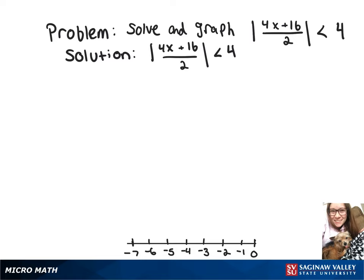So that means we've got negative 4 is less than 4x plus 16 over 2 is less than 4. So we're going to multiply all of those by 2.